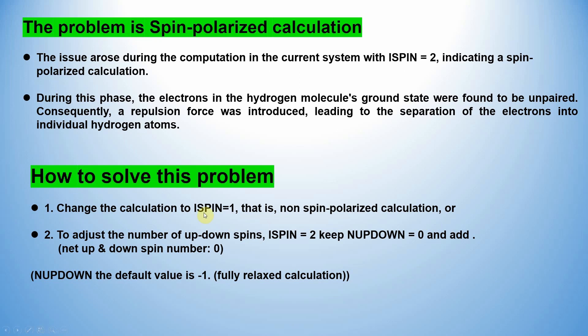This is very important. You can use ISPIN=1 or you can use ISPIN=2 with this keyword in the INCAR file: NUPDOWN=0. Then only your system will optimize in the ground state; otherwise it will dissociate and give two hydrogen atoms. I will show you that.